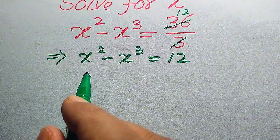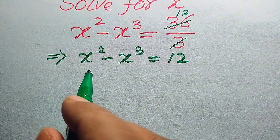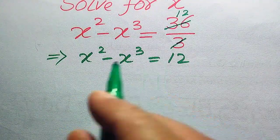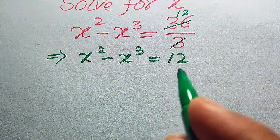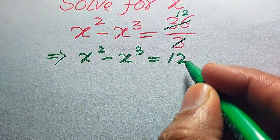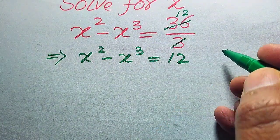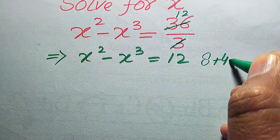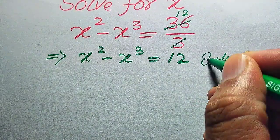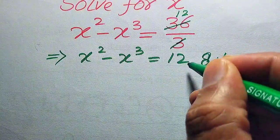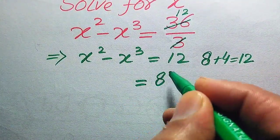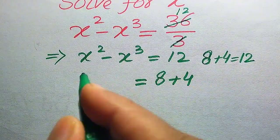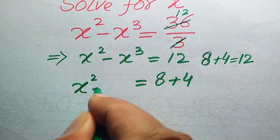Now we convert our equation into a more useful form. On the left-hand side we have two terms subtracted from each other, so we need to match that structure on the right-hand side. We break 12 as 8 plus 4, since 8 plus 4 equals 12. So we replace 12 with 8 plus 4.